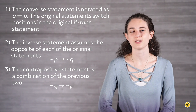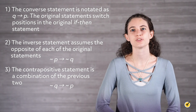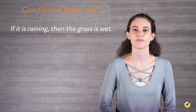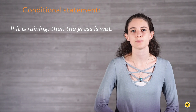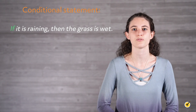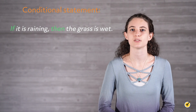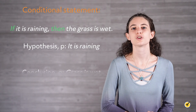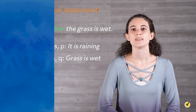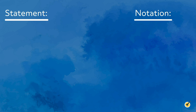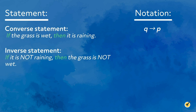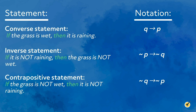An example will help make sense of this new terminology and notation. Let's start with a conditional statement: 'If it is raining, then the grass is wet.' The hypothesis is 'it is raining' (labeled p) and the conclusion is 'grass is wet' (labeled q). Now we can use the definitions introduced earlier to create the other three statements. Our converse would be: 'If the grass is wet, then it is raining.' Our inverse: 'If it is not raining, then the grass is not wet.' And our contrapositive: 'If the grass is not wet, then it is not raining.'